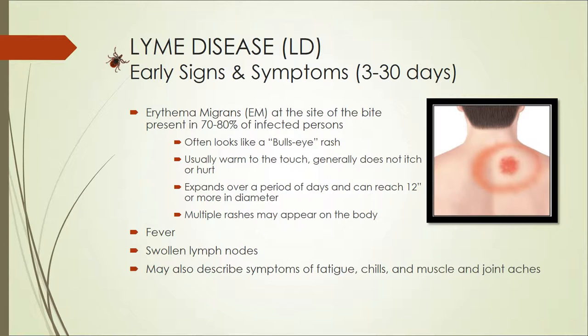Multiple rashes may appear anywhere on the body. A fever and swollen lymph nodes may be present. These are all signs that can be verified by a doctor. The person may also describe symptoms of fatigue, chills, and muscle and joint aches.